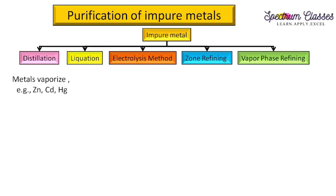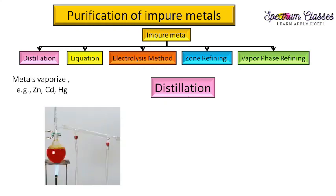Let's start with the first method — distillation. Here is the distillation assembly, which is used for low boiling point solvents. Suppose we have a solvent with some impurity present. We heat this mixture of impurity plus solvent, and when the boiling point of the solvent is reached, the solvent gets vaporized.